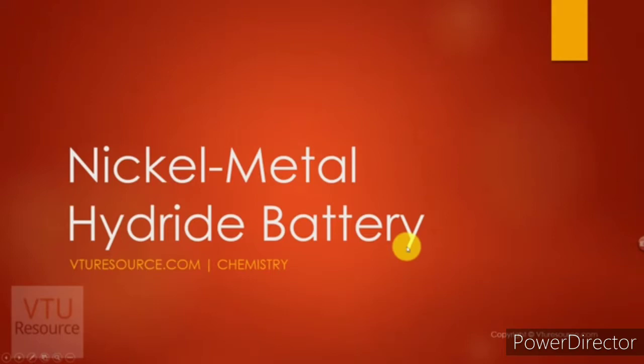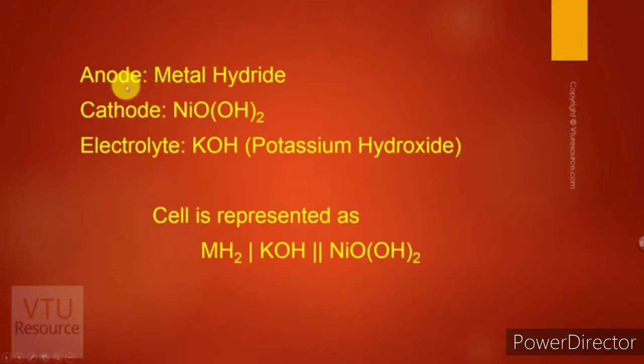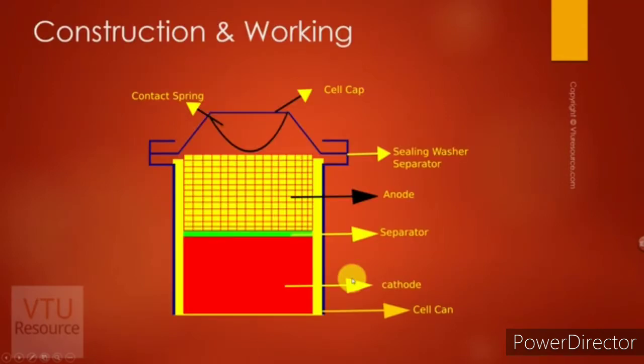Nickel-metal hydride battery is a secondary battery or rechargeable battery where the reactions are reversible. Let us discuss the construction and working of nickel-metal hydride battery. The anode used is metal hydride. The cathodic active species is nickel-oxy-hydroxide and the electrolyte uses potassium hydroxide.